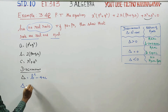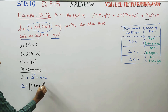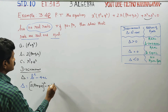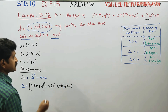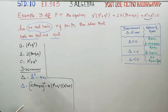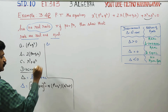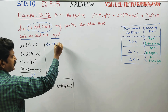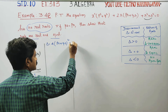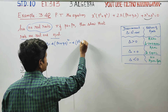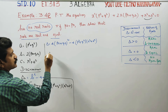Delta equals b² minus 4ac. B is 2 times (pr plus qs), so b² equals [2(pr + qs)]². Then 4 times a, which is p² plus q², times c, which is r² plus s². So delta equals 4(pr + qs)² minus 4(p² + q²)(r² + s²).